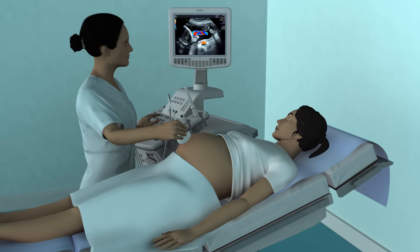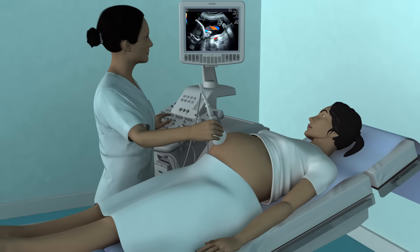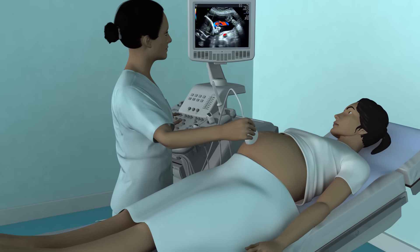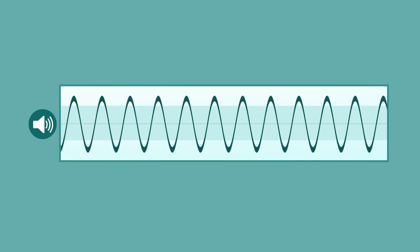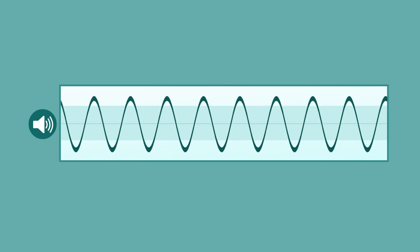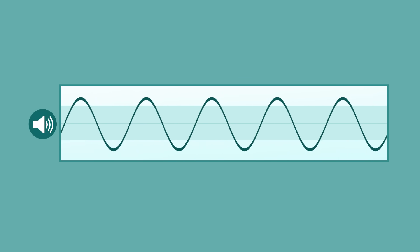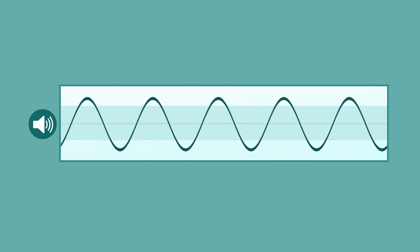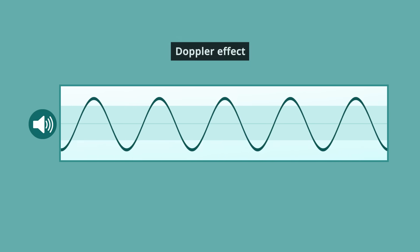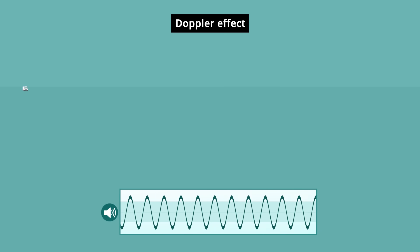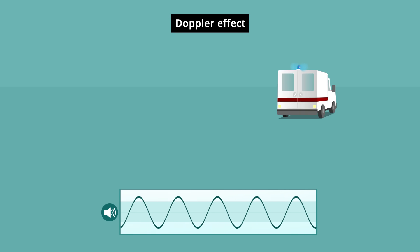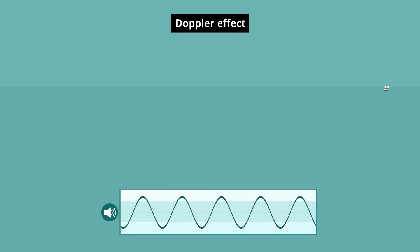Ultrasound machines are able to record the movement of fluids within the body by making use of something called the Doppler effect. The frequency of a sound wave changes depending on whether something is moving towards or away from its source. This is known as the Doppler effect and is why the sound of an ambulance appears to get higher, its frequency increases as it comes towards you, and lower, its frequency decreases as it moves away from you.